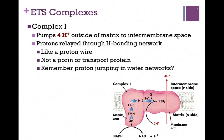As Complex 1 passes these electrons along, the energy gained allows us to pump protons. Through Complex 1, we have enough energy to pump four protons — going from inside the matrix to outside. These protons are relayed through a hydrogen bonding network, like a proton wire. It's not a porin or a transport protein; it's more akin to the proton jumping seen in water networks from Chapter 2.